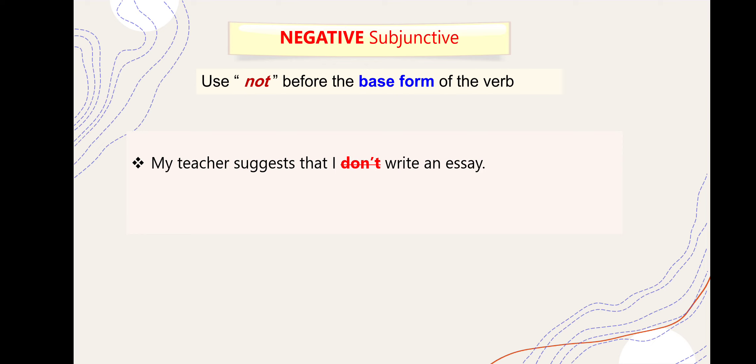Negative subjunctive - تعلمنا على الصيغة الإيجابية. الآن نشوف الصيغة المنفية. نضع 'not' قبل الفعل المجرد. مثلاً: 'my teacher suggests that I don't write an essay' - هذا خطأ. بدل 'don't' نحط 'not write'. يعني 'don't' غلط، الصح 'not' قبل الفعل المجرد مباشرة.